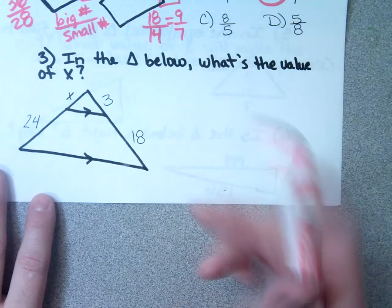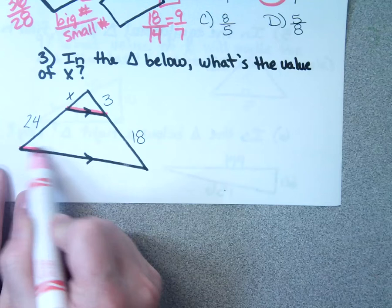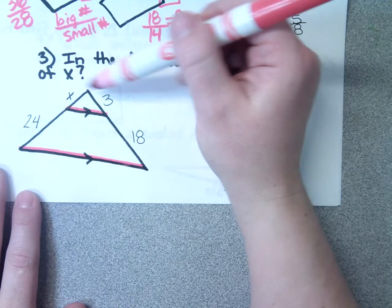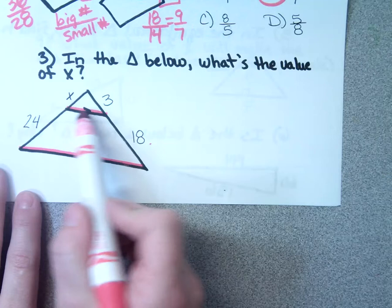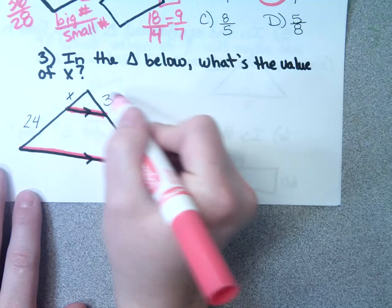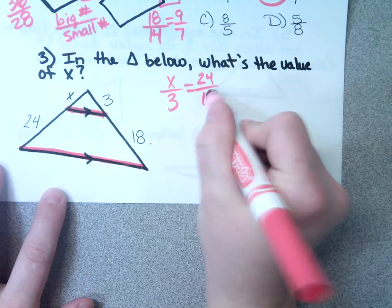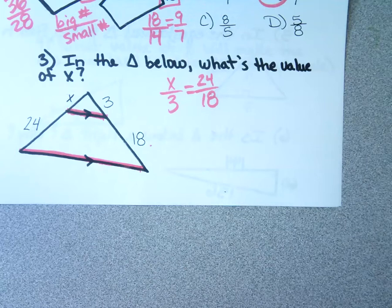Number three says, in the triangle below, what's the value of X? If we have a segment in the triangle that's parallel to the base, it cuts the triangle up into proportional pieces. So I could say X is to 3 as 24 is to 18. I'll go X over 3 equals 24 over 18. Cross multiply and divide. What do you get? 4.